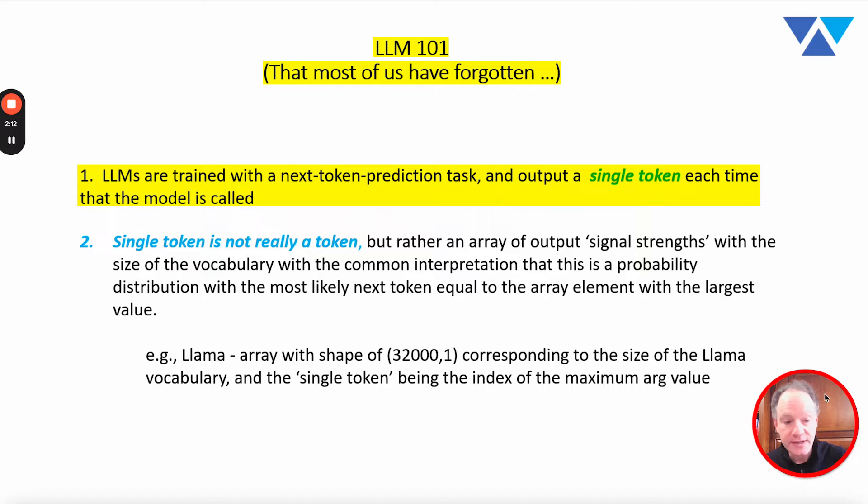It takes an input and it generates one incremental output in each forward pass of the model. Now, to say that it produces one single token is actually slightly inaccurate. Actually, what the model does is it generates an array of output signal strengths. The dimensions of that array correspond to the size of the vocabulary with the interpretation that we typically have is that this is a probability distribution. It's a probability distribution across the total vocabulary with each element of the array corresponding to a different token in that vocabulary and the overall probability distribution of that particular token as the next token, given what was passed in the context of the input.